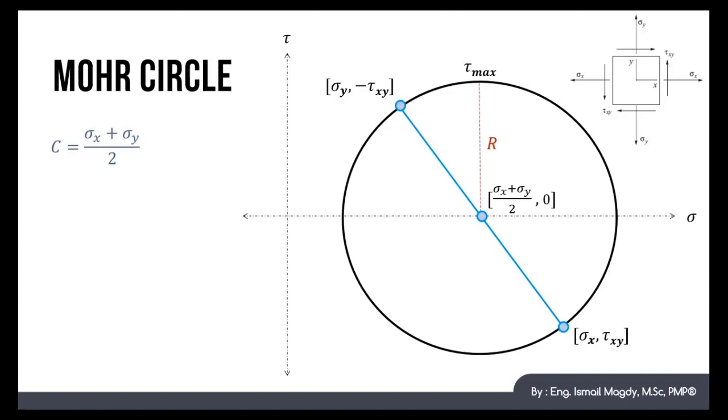We can easily calculate the value of R using the Pythagorean equation, which will equal the square root of ((sigma x minus sigma y) over 2) all squared plus tau xy squared.